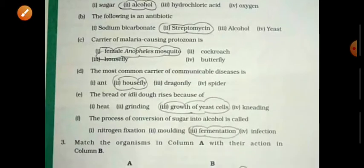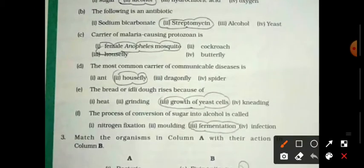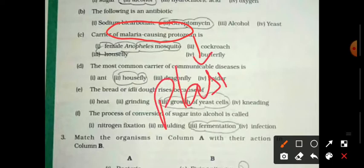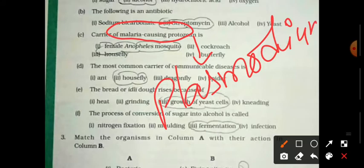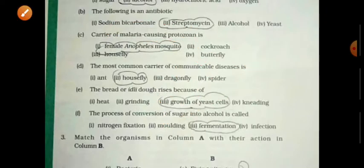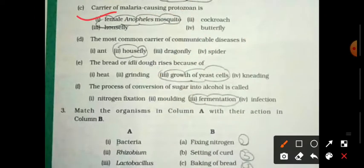Next, carrier of malaria causing protozoa. Malaria causing protozoa, which scientific name is plasmodium. This is basically due to the female anopheles mosquito. Now a point arises, why?